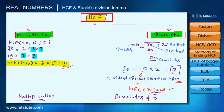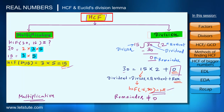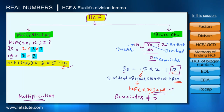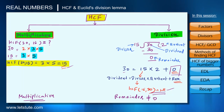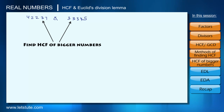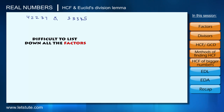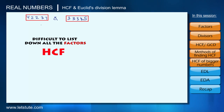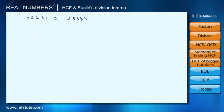We have seen both methods — multiplication and division — but you might wonder when to use which. Earlier, the most common method was multiplication, but people found difficulties finding the HCF of larger numbers. For example, finding the HCF of 422,237 and 33,345 would make it very difficult to list all factors, so for larger numbers we prefer the division method.